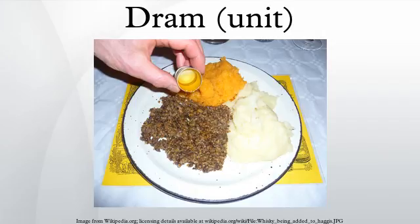Ancient unit of mass: the Attic Greek drachma was a weight of six obols, one one-hundredth of a Greek mina, or about 4.37 grams. The Roman drachma was a weight of one ninety-sixth of a Roman pound, or about 3.41 grams. The Ottoman dirham was based on the Sassanian dram, which was itself based on the Roman dram.